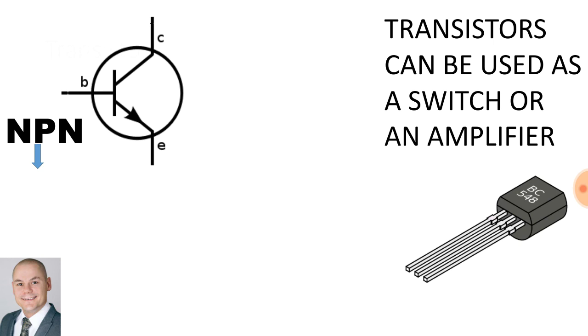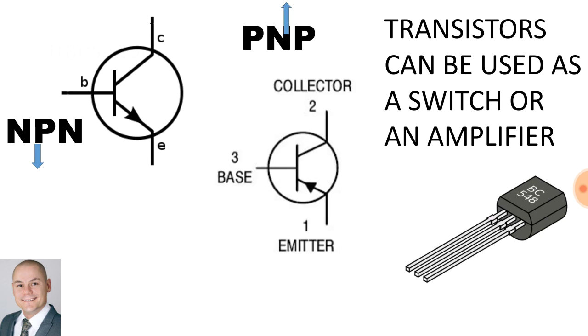There are different types of transistors. We get the NPN transistor and also PNP transistors. Transistors can be used as a switch or an amplifier.